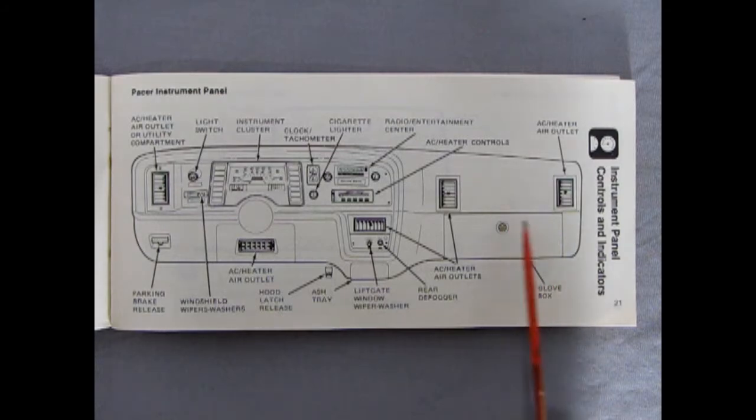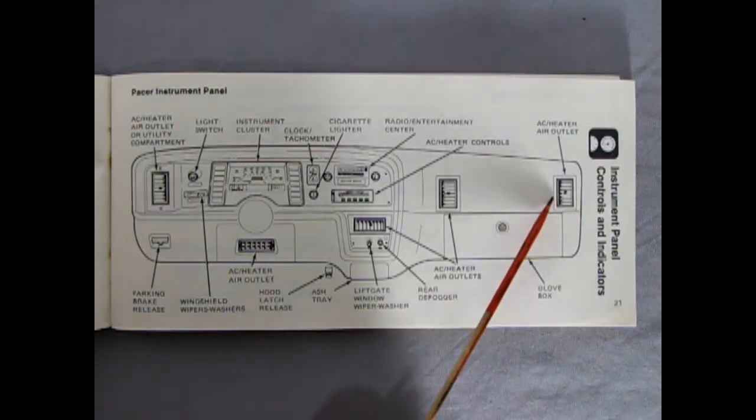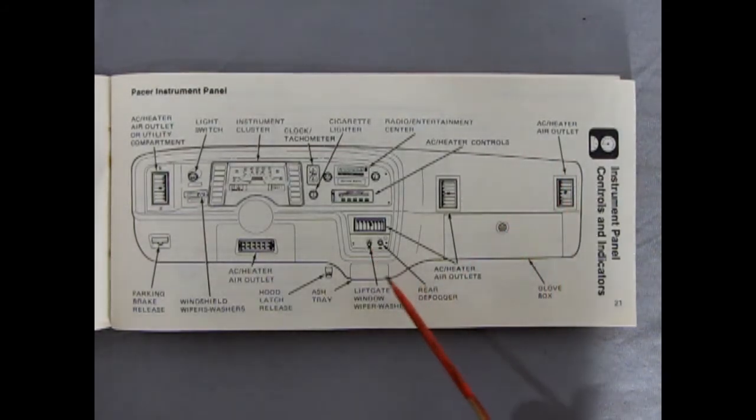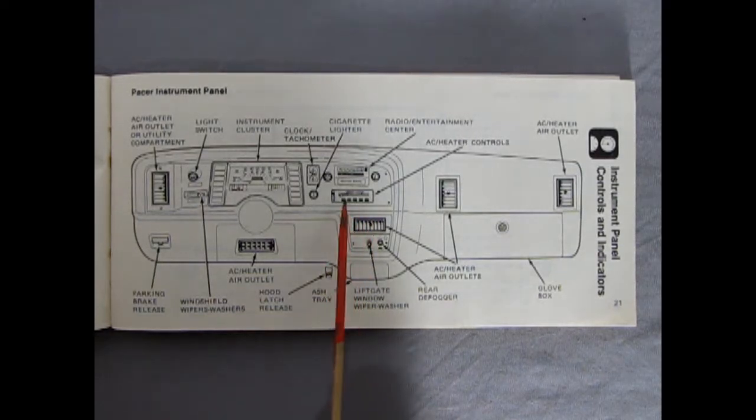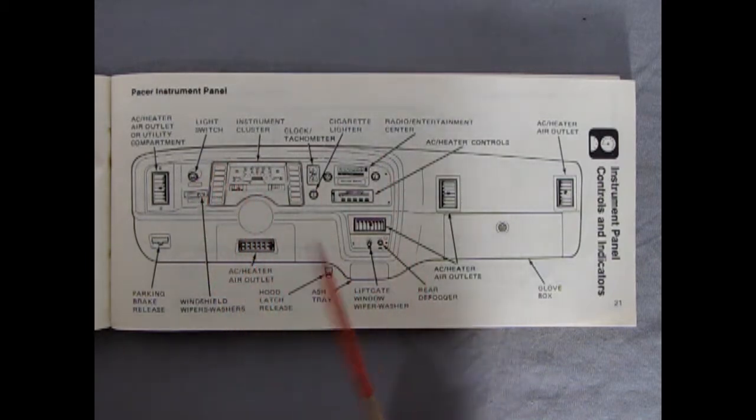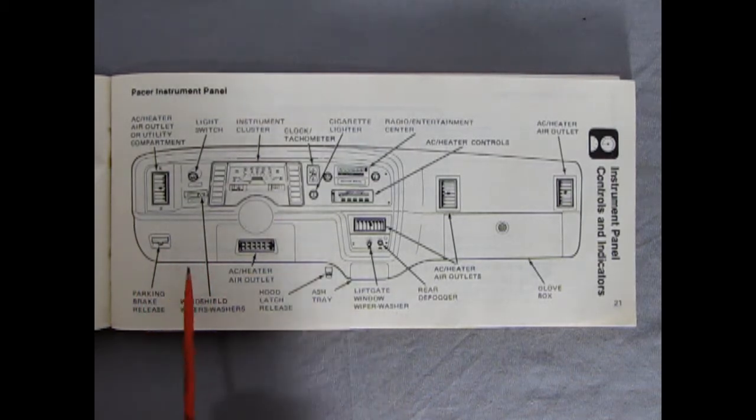Now as we look at this illustration, we can see our AC heater air outlets. This is the lift gate window wiper washer button. And then we've got our rear defogger here, as well as our AC heater controls, our radio, the clock, and the tachometer as one piece. Our instrument cluster, the light switch, our AC heater air outlet underneath. That was optional, of course. The hood latch and the hood latch release. And then our parking brake release over here.